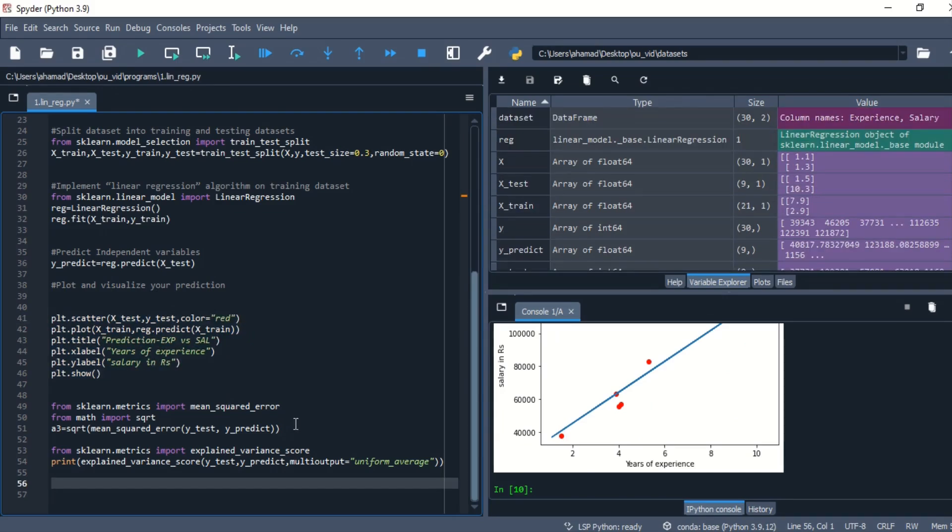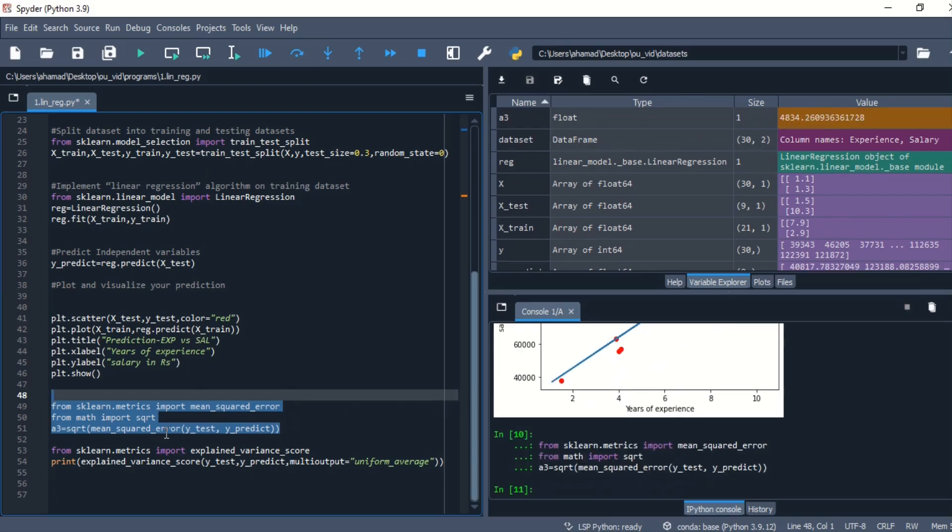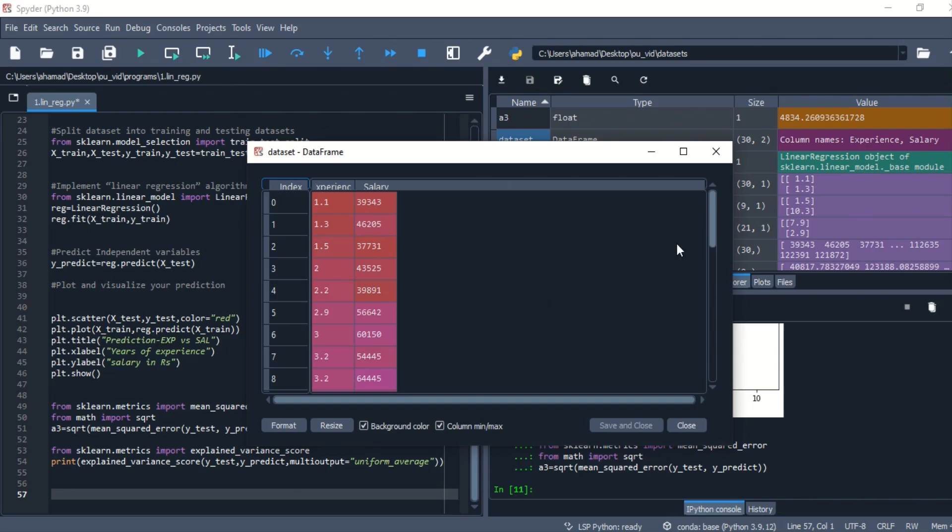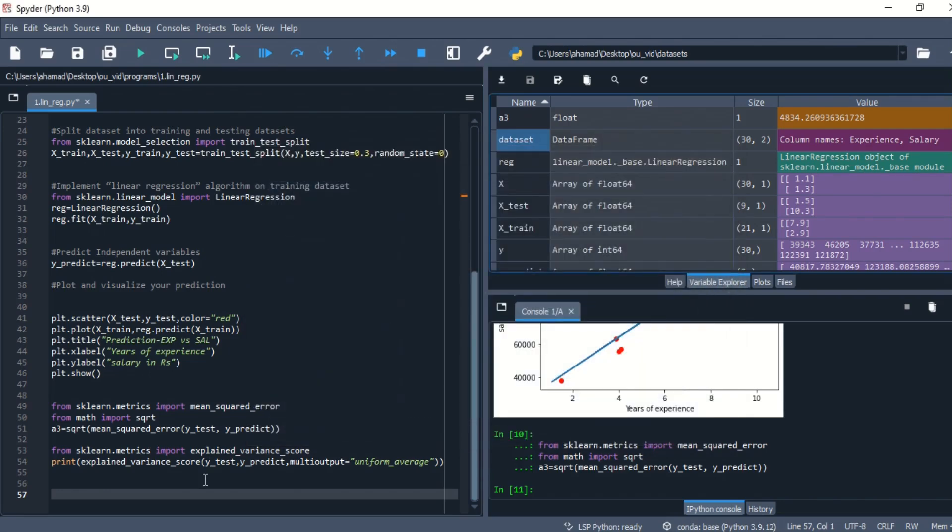So let's look at the mean squared error of our prediction. And let me tell you, why we are using mean squared error and explained variance score has been explained clearly in the previous site video. Please go through that. See, the mean squared error is stored in A3. Look, yeah, it has come up to be 4834 approximately. It is pretty good for a dataset which is containing values for 40,000 to 130,000. Yeah, it is pretty good prediction.